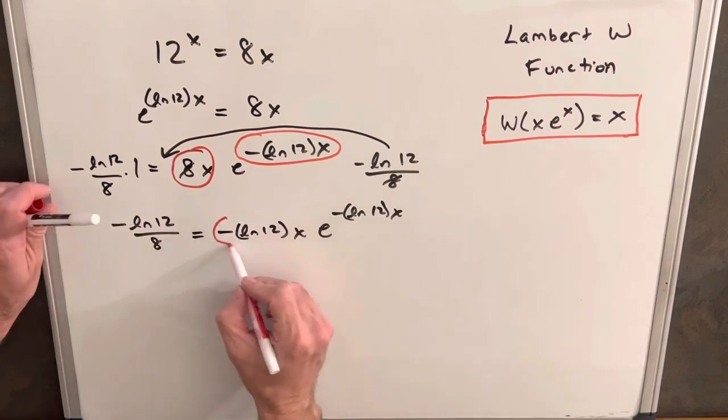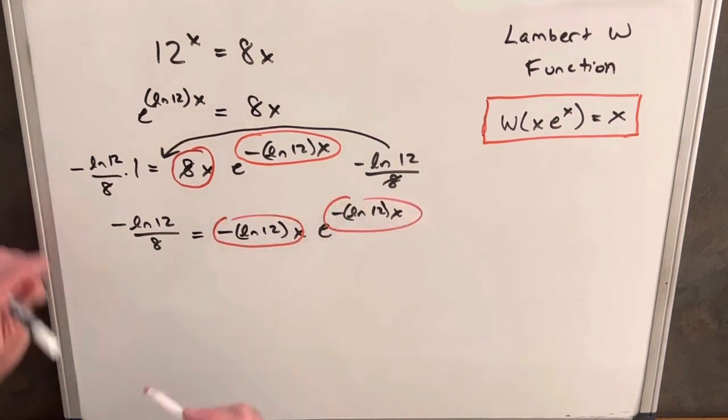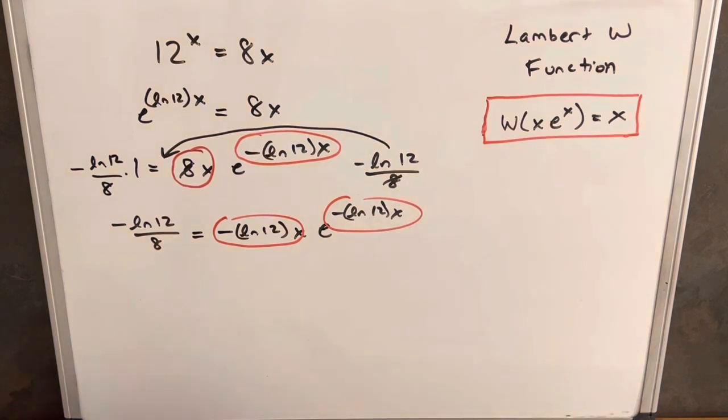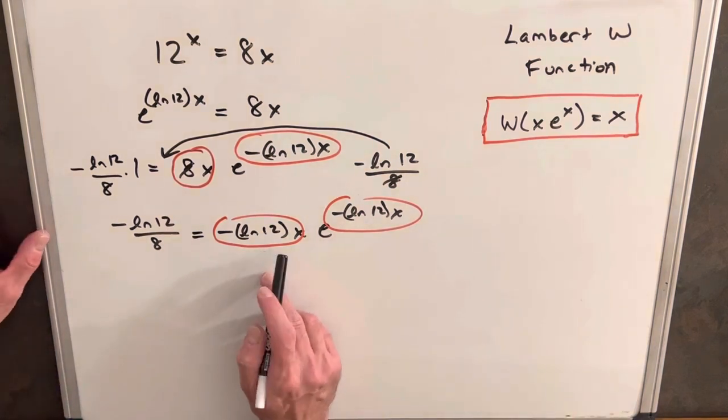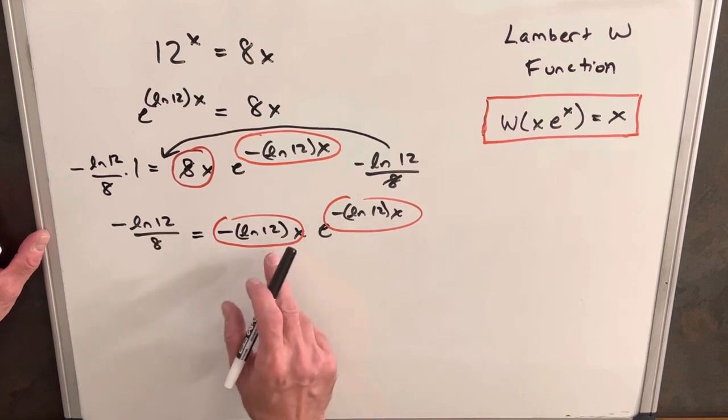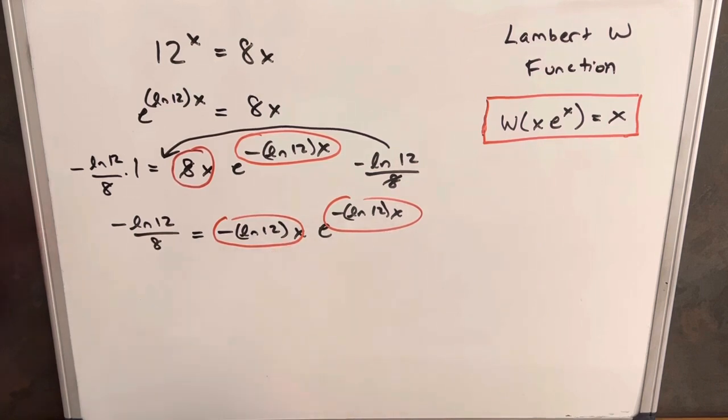And now we have this matching coefficient exponent situation that we want, so we can use our Lambert W function. If you wanted, you could do like a u substitution, call this red stuff u and this red stuff u, and then you would just output minus ln 12x. So let's see how that's going to work when we take Lambert W function on both sides.